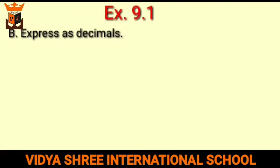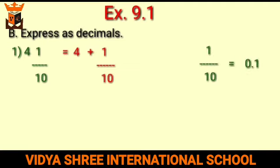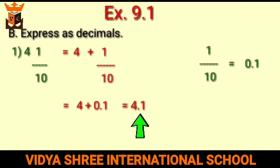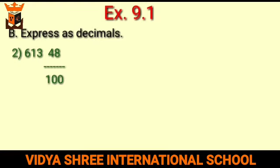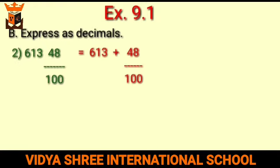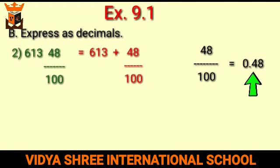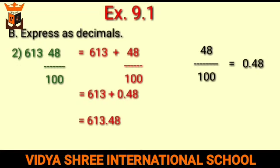Part B: express as decimal. For 4 and 1 by 10: write as 4 + 1/10. Since 1/10 in decimal form is 0.1, adding gives 4.1. For 613 and 48 by 100: write as 613 + 48/100. Since 48/100 = 0.48, adding gives 613.48.